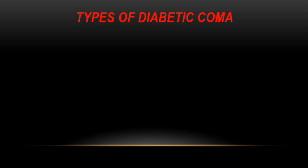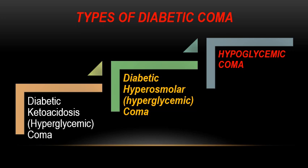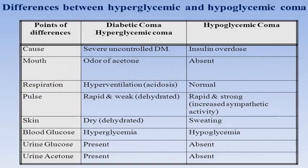There are three types of diabetic coma: two associated with hyperglycemia and one with hypoglycemia. The diabetic ketoacidosis hyperglycemic coma is associated with type 1 diabetes. The diabetic hyperosmolar hyperglycemic coma is associated with type 2 diabetes and involves altered consciousness. The most important, lethal and dangerous is the hypoglycemic coma. Here is a simple comparison between the hyperglycemic coma and the hypoglycemic coma.